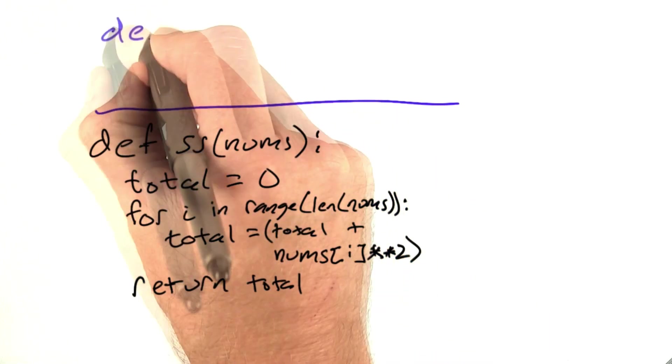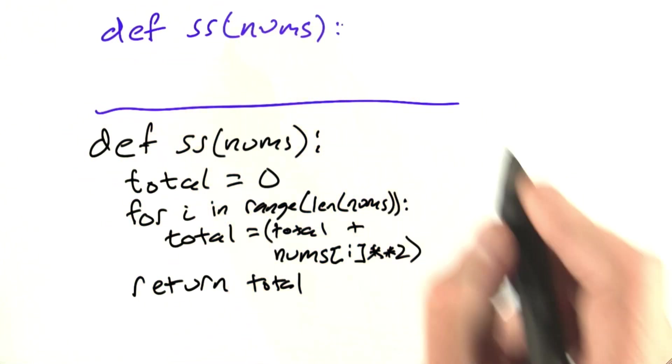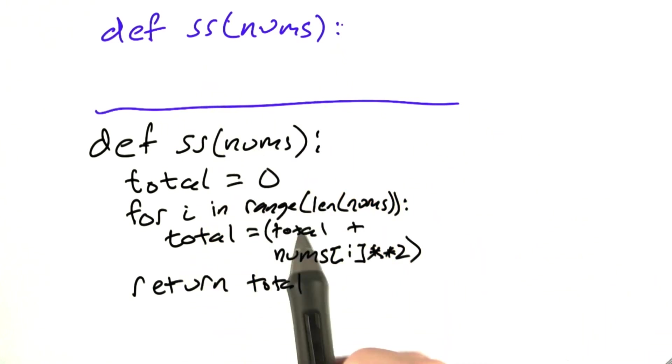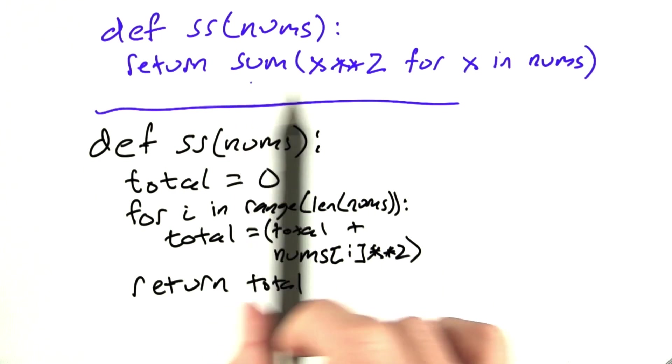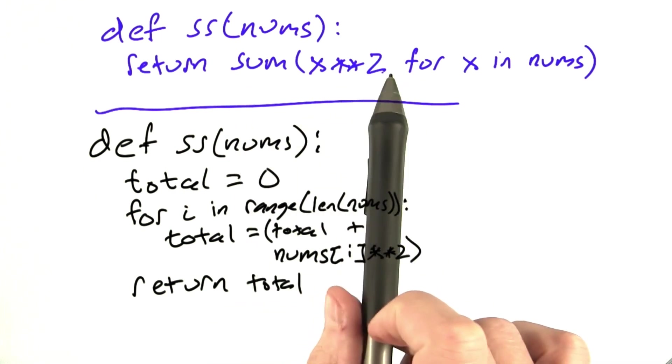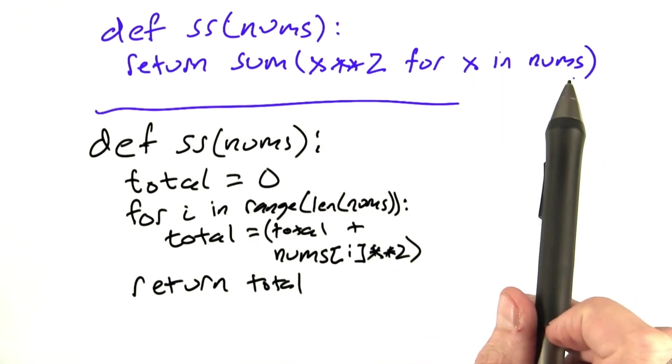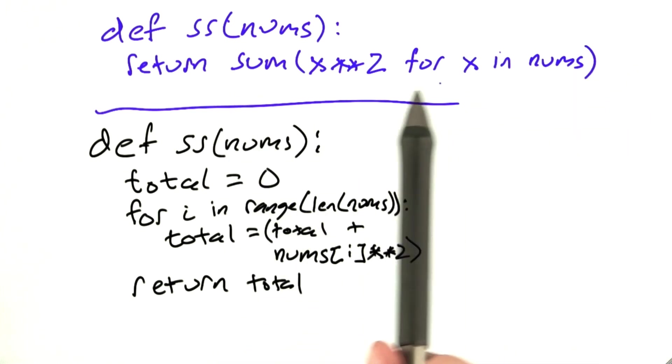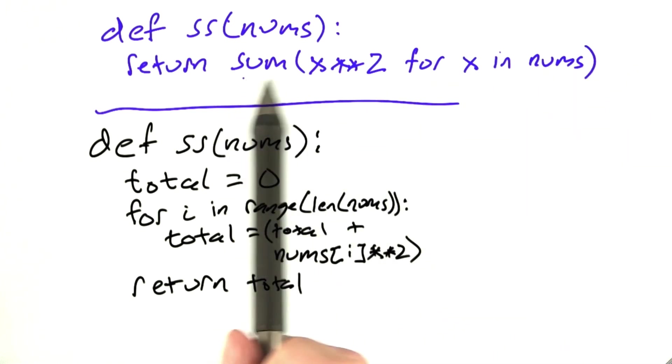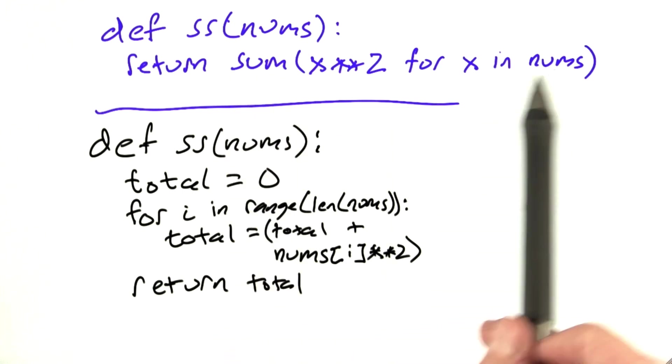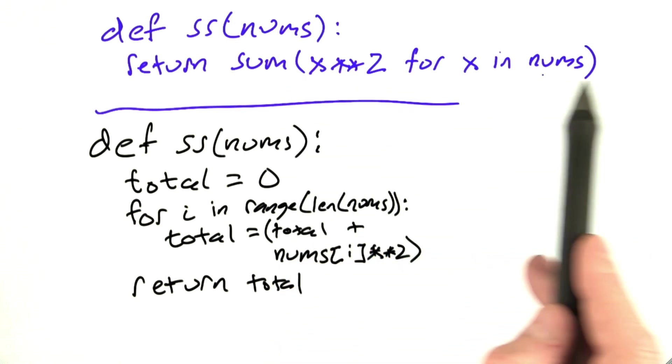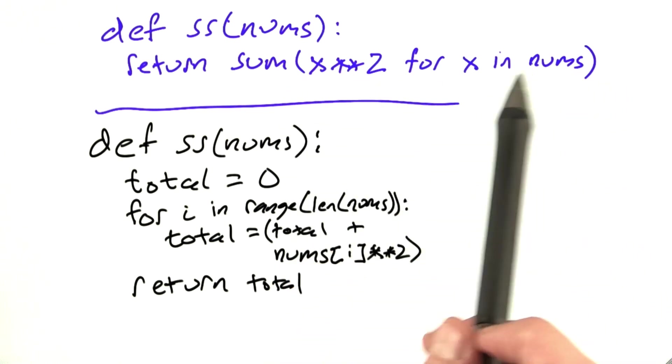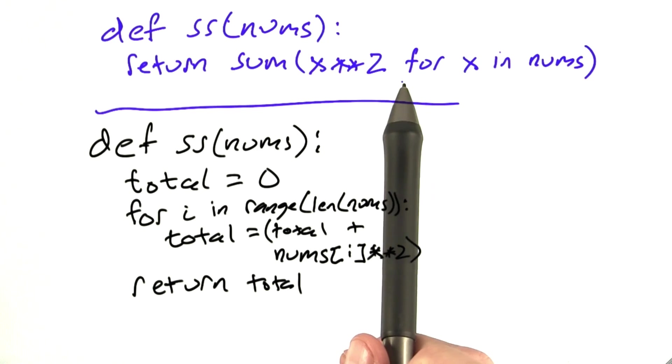And mine might look like this, same function definition. But I might prefer a functional style rather than a sequential style, where I'm saying return the sum of the squares of x for each x in numbers. Now, maybe you've never seen something like this before. Maybe you didn't know about the sum function. Maybe you didn't know about this type of generator expression in line. So this might all be new to you.